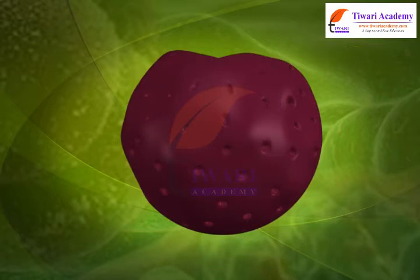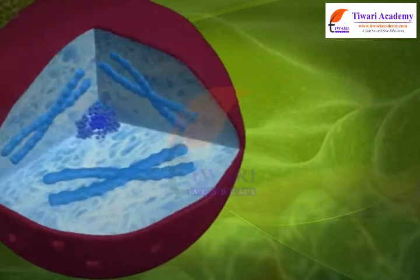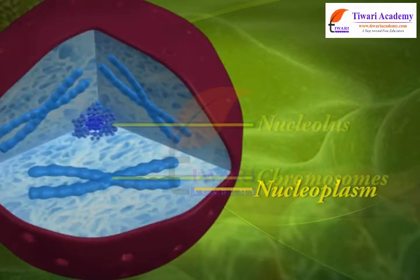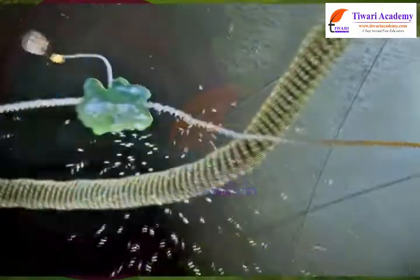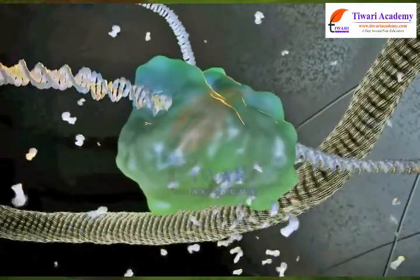Within the nucleus is present a substance called nucleoplasm. The nucleus contains the nucleolus and chromosomes, and its primary function is to control the activities that occur within the cell.